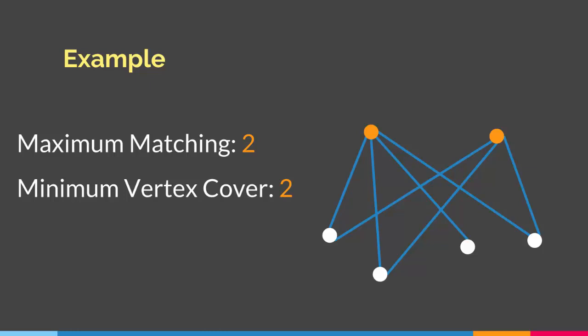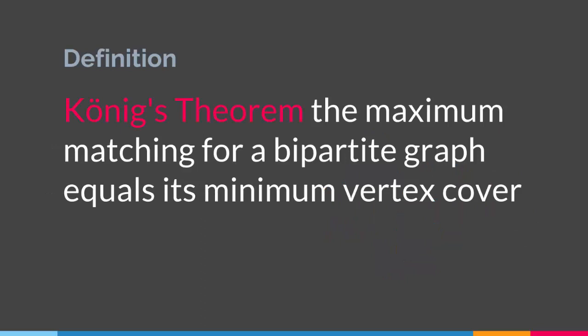So if your teacher asks you to find the minimum vertex cover of a bipartite graph, all you have to do is find the maximum matching. Or if he asks you to find the maximum matching, all you have to do is find the minimum vertex cover, since those two numbers are equal for a bipartite graph. Koenig's theorem says that the maximum matching for a bipartite graph equals its minimum vertex cover. And with this, we come to the end of this lecture.